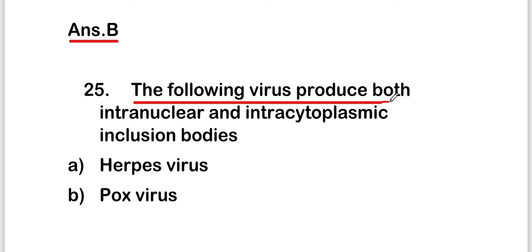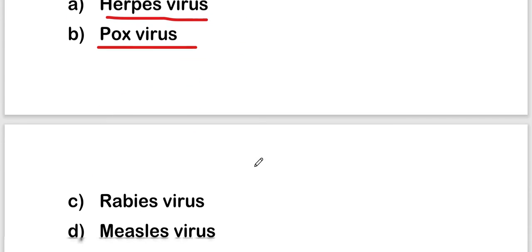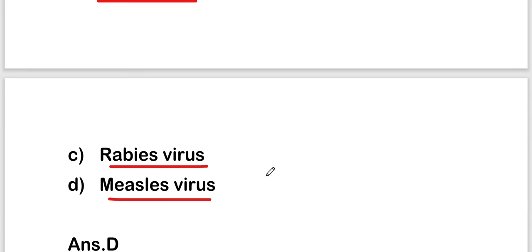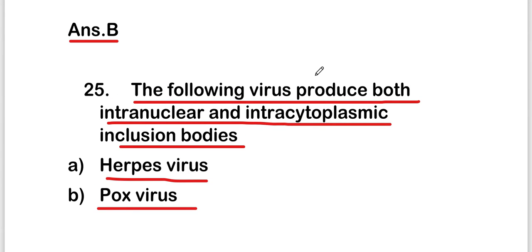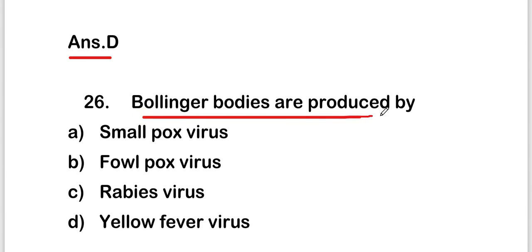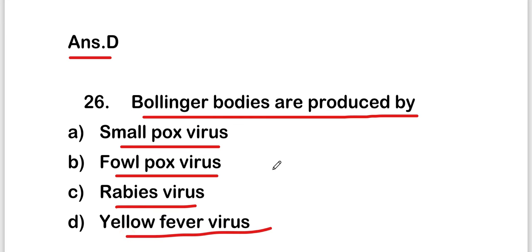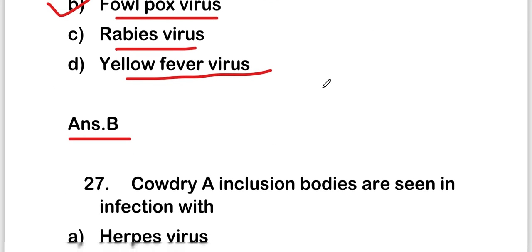The next question asks which virus produces both intranuclear and intracytoplasmic inclusion bodies. Following that, Bollinger bodies are produced by which virus — smallpox virus, fowlpox virus, rabies virus, or yellow fever virus? The right answer is option B, fowlpox virus. Bollinger bodies are produced by fowlpox virus.